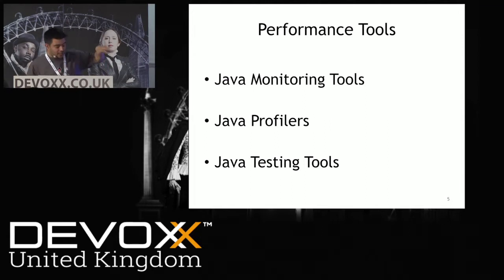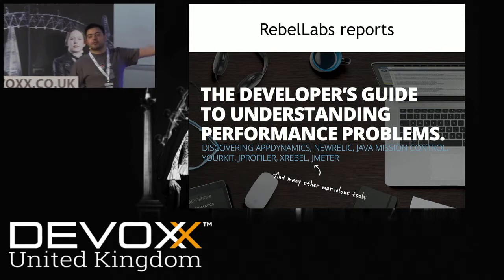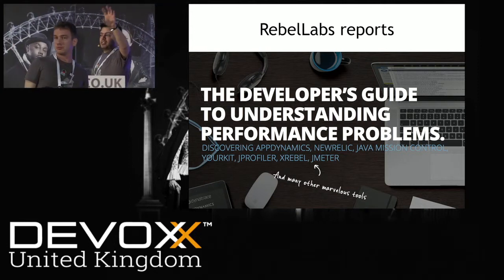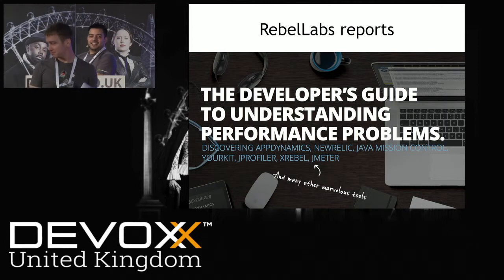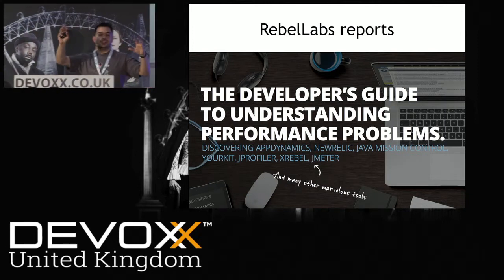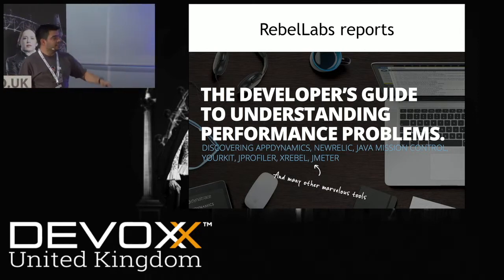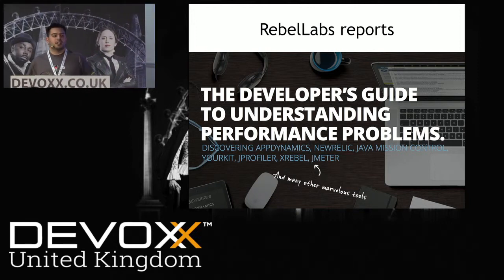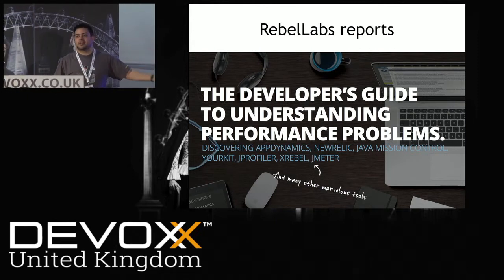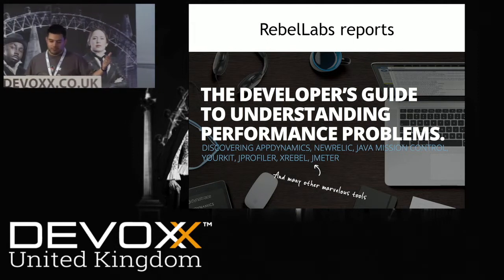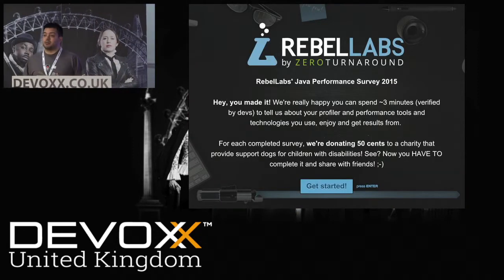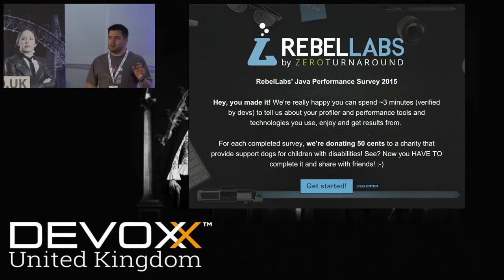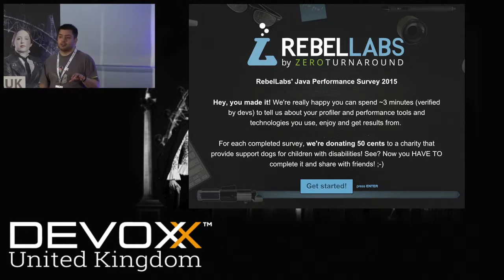We've also released free reports that you can download. Oleg, head of Rebel Labs, is the guy to thank for all these cool free reports. This is a great report which Oleg and I wrote about performance — understanding background terms as well as which profilers and APMs might suit you better. We released a survey only a few months ago and we're going to share those results now — about 1,500 responses.